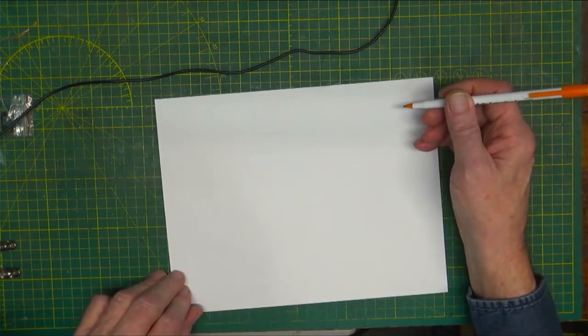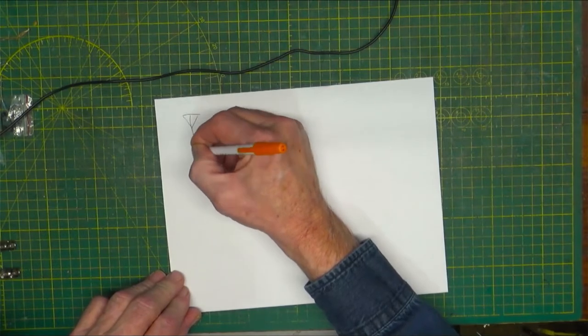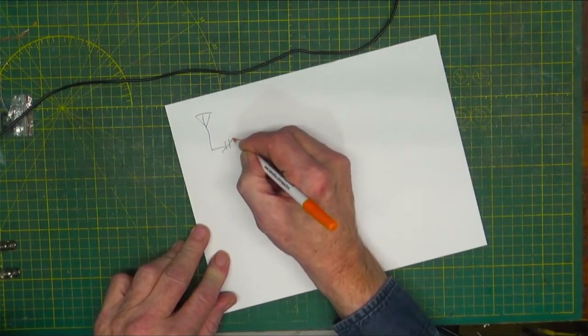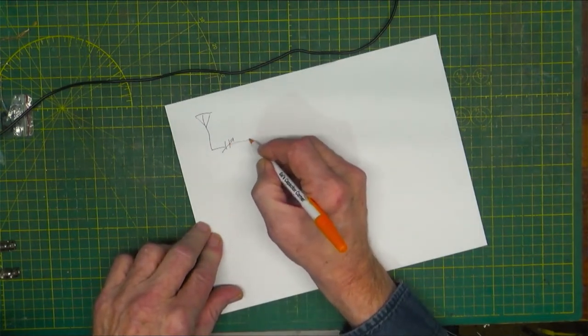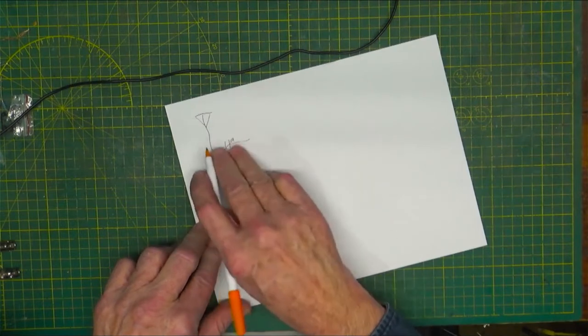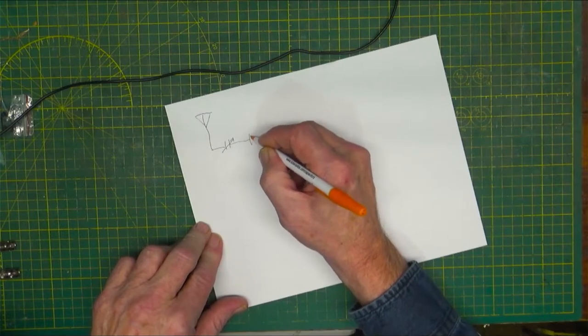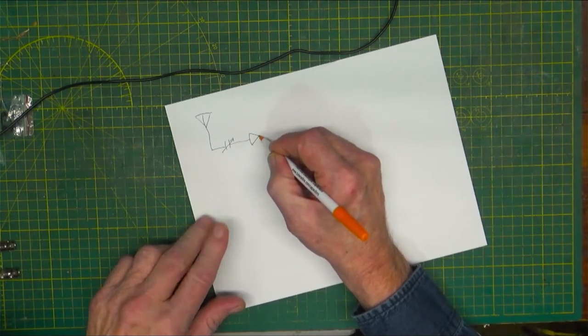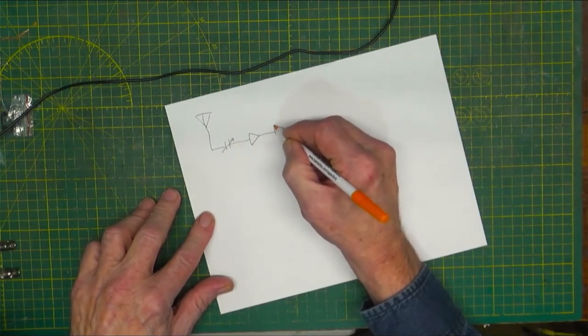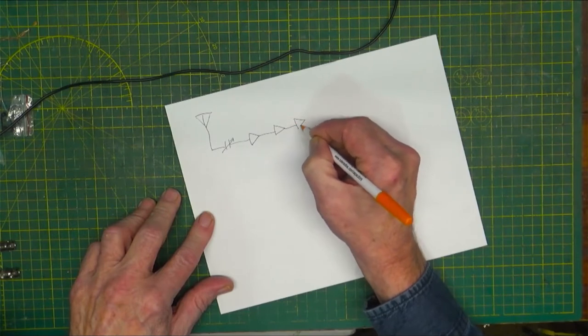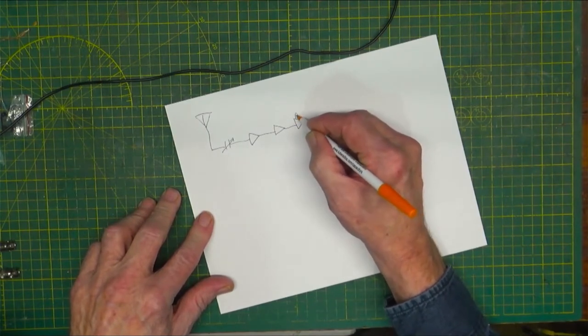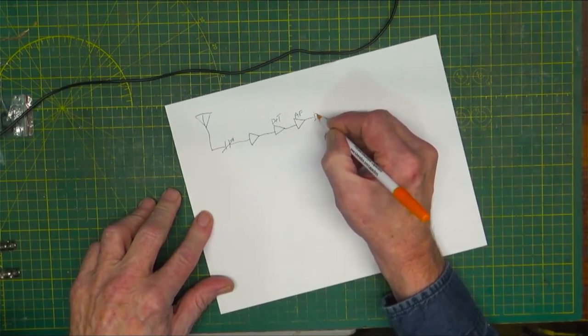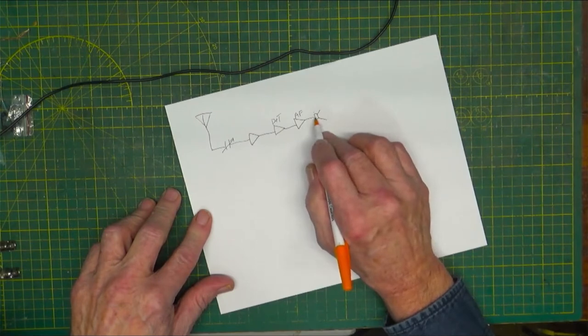Basically you have an antenna that comes down and that antenna will go into a variable capacitor. That variable capacitor will come out, this is a very basic description, to an amplifier that goes out to another amplifier, then to a detector, to AF amplifier to your speaker. That's the simplest that you get.